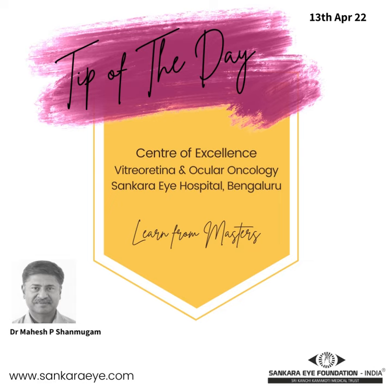In indirect ophthalmoscopy, the observer's pupils are brought together with the use of prisms. The light source, the condensing lens, and the patient's pupil should be in a single axis. When any of these components are not in this axis, a good binocular image will not be seen.